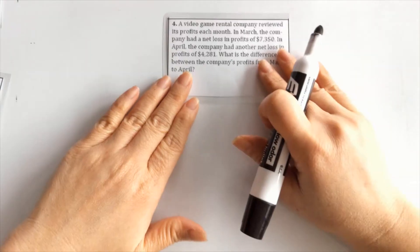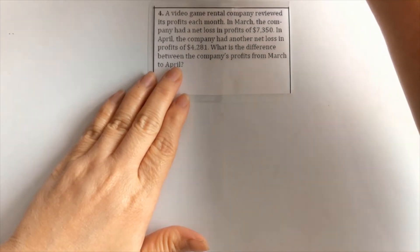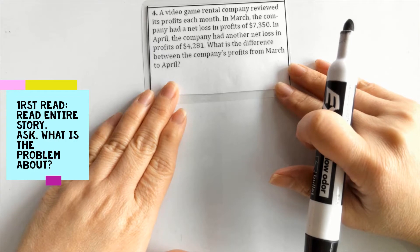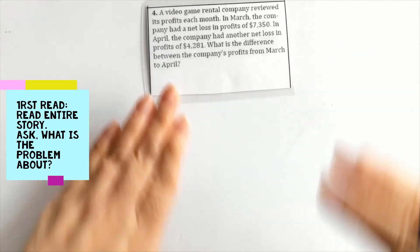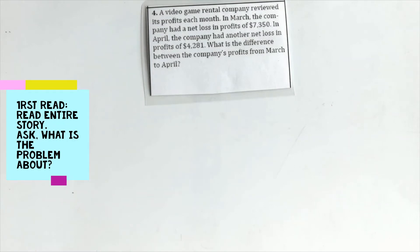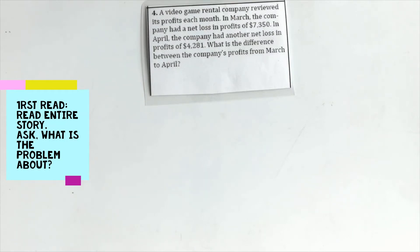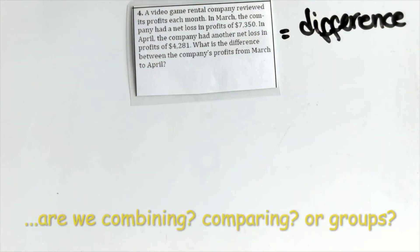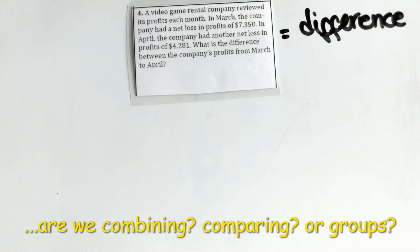So that was my three reads. Now let's look at the next problem. I'm going to apply the three reads again — read it the first time to understand what it's asking. 'A video game rental company reviewed its profits each month. In March the company had a net loss in profits of $7,350. In April the company had another net loss in profits of $4,281. What is the difference between the company's profits from March to April?' What is the question asking? When I hear 'difference,' I ask myself: is this about combining, comparing, or groups?